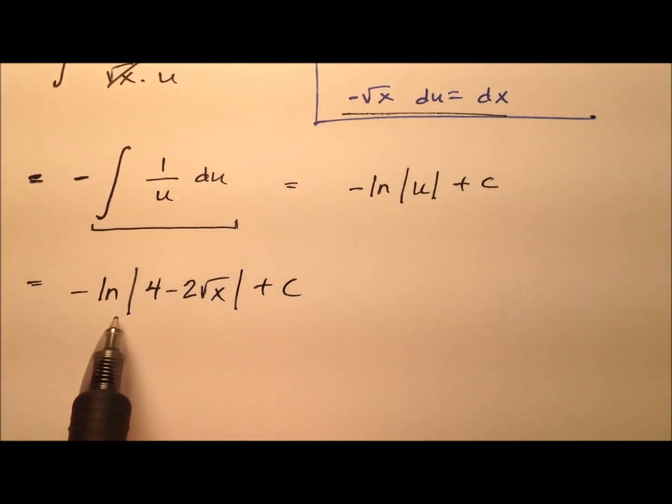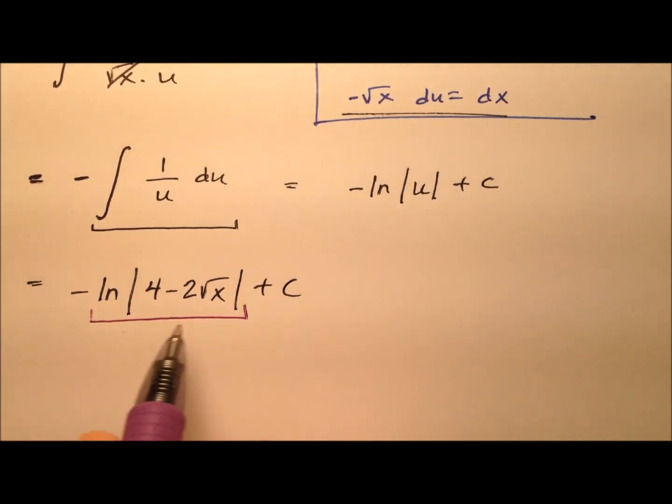But I'm going to change this just a little bit and we can simplify it down. So we have this natural log here. I'm going to rewrite this as the natural log of, and I'm going to factor a 2 out of here. So twice the absolute value of 2 minus the square root of x, just like that.